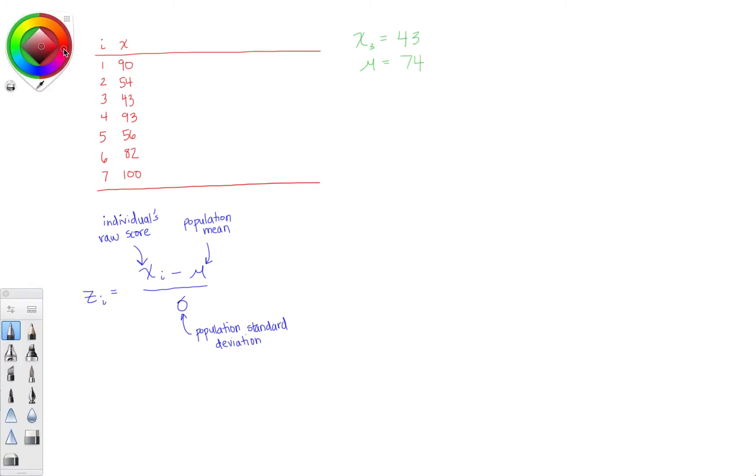The real laborious part when calculating a z-score is finding the population standard deviation. In some problems, it may be given to you, but in many cases, you'll need to find it yourself.